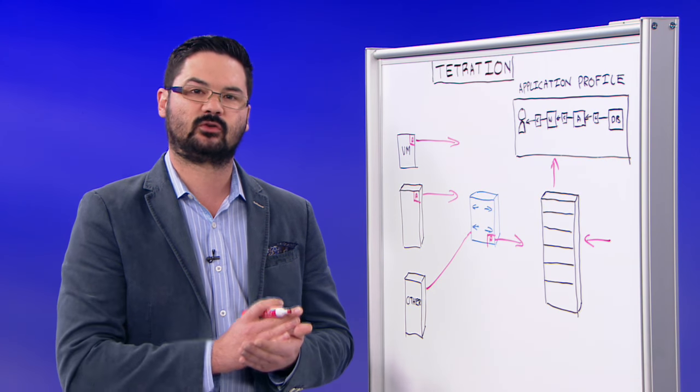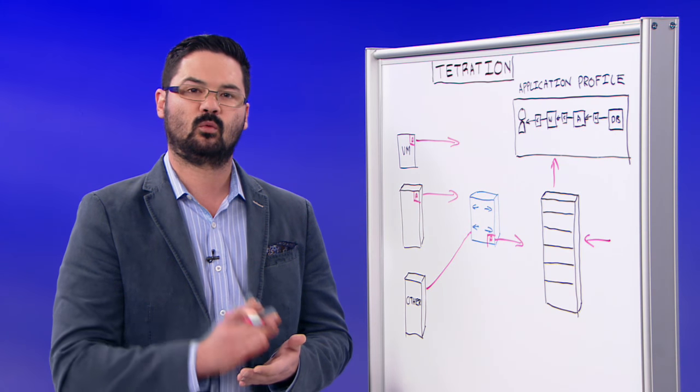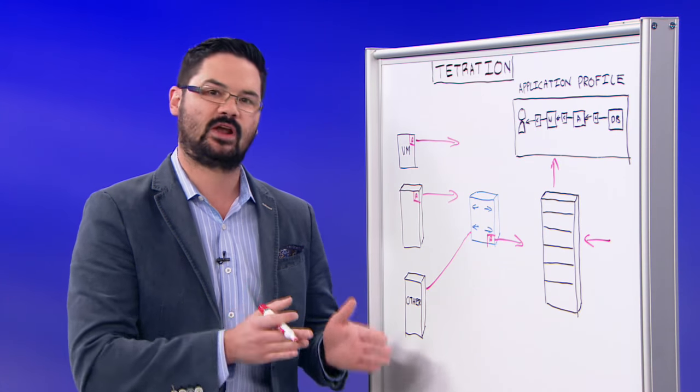Because the Tetration appliance has these flow records sitting resident within the appliance, it can actually do a logical test of what a security implementation change would do and the effects it would have on your current flows.